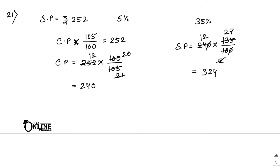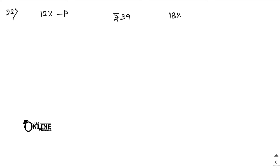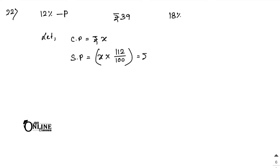Sum number 22: A shopkeeper sells a bag at 12% profit. If he had sold it for rupees 39 more he would have made 18% profit. Find the cost price of the bag. Let the CP equal rupees x. With 12% profit, SP equals x into 112 by 100, written as 112x by 100.